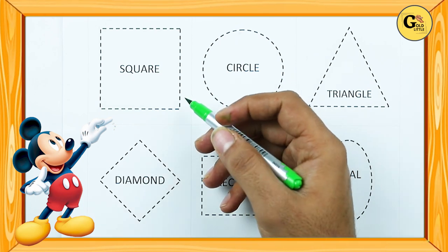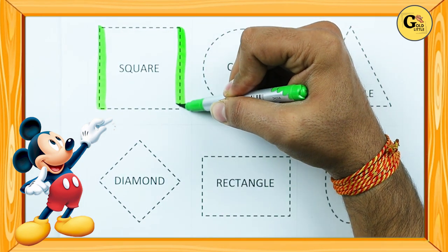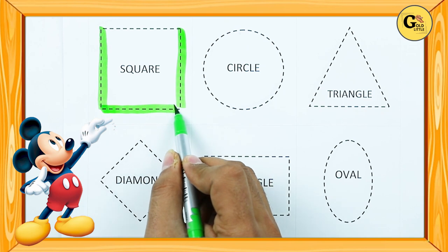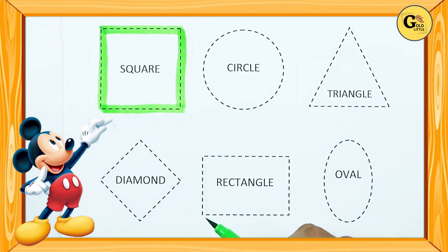It's square. One line, two line, three line, four line, two slipping line, two standing line.